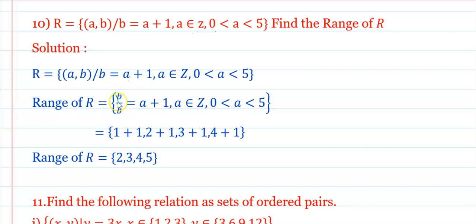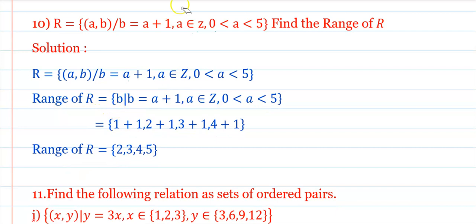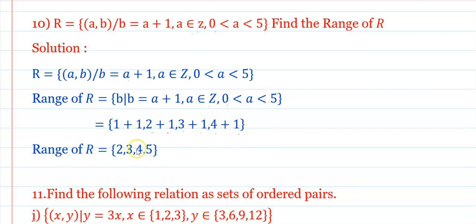R₃ = {(a, b) : b = a+1, a ∈ Z, 0 < a ≤ 4}. Values: a=1, b=2; a=2, b=3; a=3, b=4; a=4, b=5. Range of R = {2,3,4,5}.